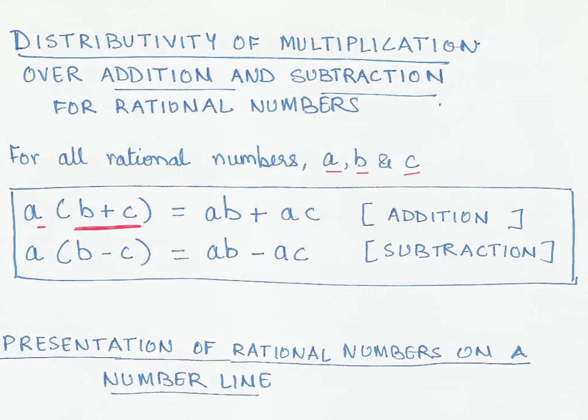to do the multiplication first and then addition, that is ab plus ac. This is what is known as distributivity of multiplication over addition, that is shown over here.